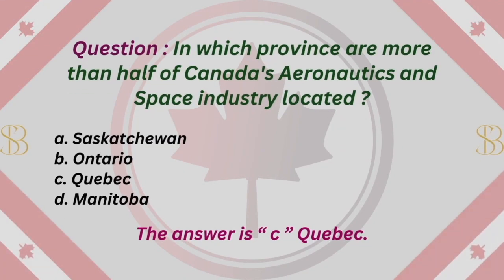Question: In which province are more than half of Canada's aeronautics and space industry located? A. Saskatchewan. B. Ontario. C. Quebec. D. Manitoba. The answer is C. Quebec.